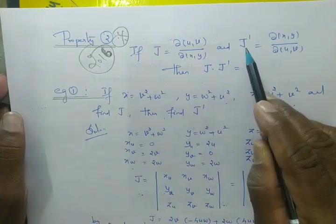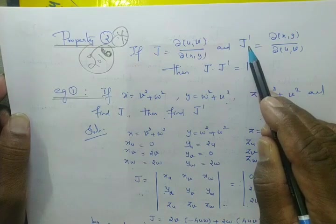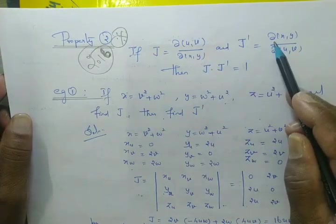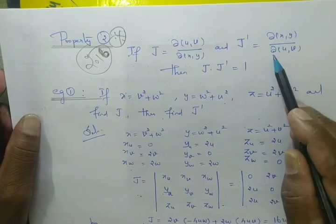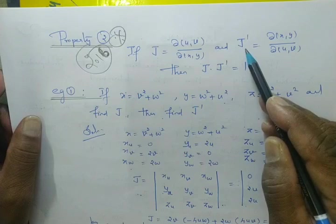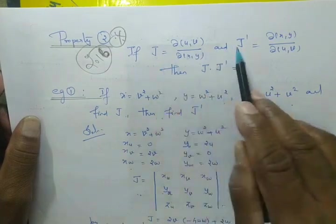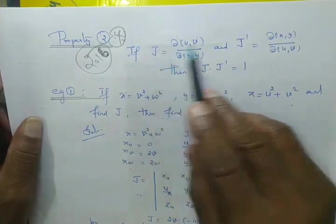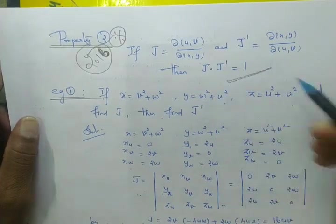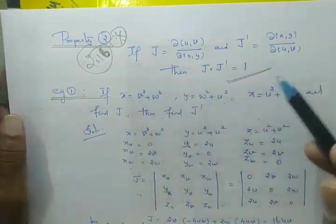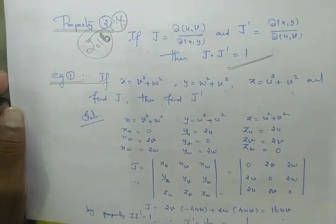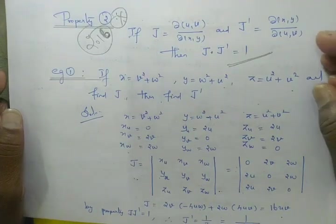You can write this equation. The property here is the original property, and the problem here comes from both the property. If we want to use the property, we have to apply it accordingly — there is no problem. This is Property 2.